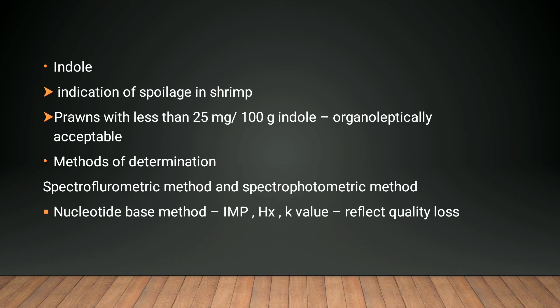After degradation of TMA, the ultimate compound formed is indole. Indole is also a quality index method that indicates spoilage in shrimp. Prawn with less than 25 mg per 100 gram of indole is organoleptically acceptable. If it exceeds this value it means the shrimp is unfit. The method of determination is the HPLC method, spectrofluorometric method, and spectrophotometric method.